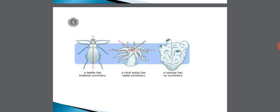The first animal shown is a beetle, which shows bilateral symmetry — there is a dotted line in the center longitudinal axis, and on either sides of that median line, the different body organs are arranged equally. The second diagram shows a polyp, a cnidarian, which shows radial symmetry — the dotted lines indicate it can be cut into two equal halves through the central median axis on any plane. The last animal is a sponge, which has no definite symmetry — this type is called asymmetry.